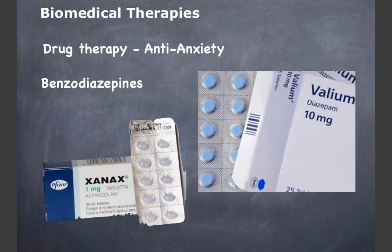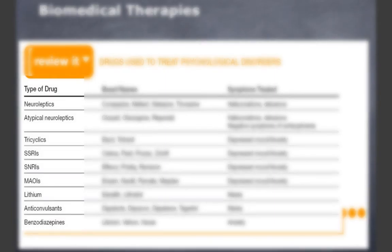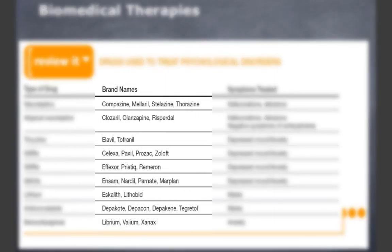Xanax works fast and has few side effects, but relapse is likely if discontinued, and withdrawal symptoms include intense anxiety. The disadvantage of drug therapy is difficulty in establishing proper dosage. These drugs help with symptoms but are not a cure for psychological disorders — maintenance doses are required to prevent relapse. A slide here lists common drugs used to treat psychological disorders, their brand names, and the symptoms they treat.